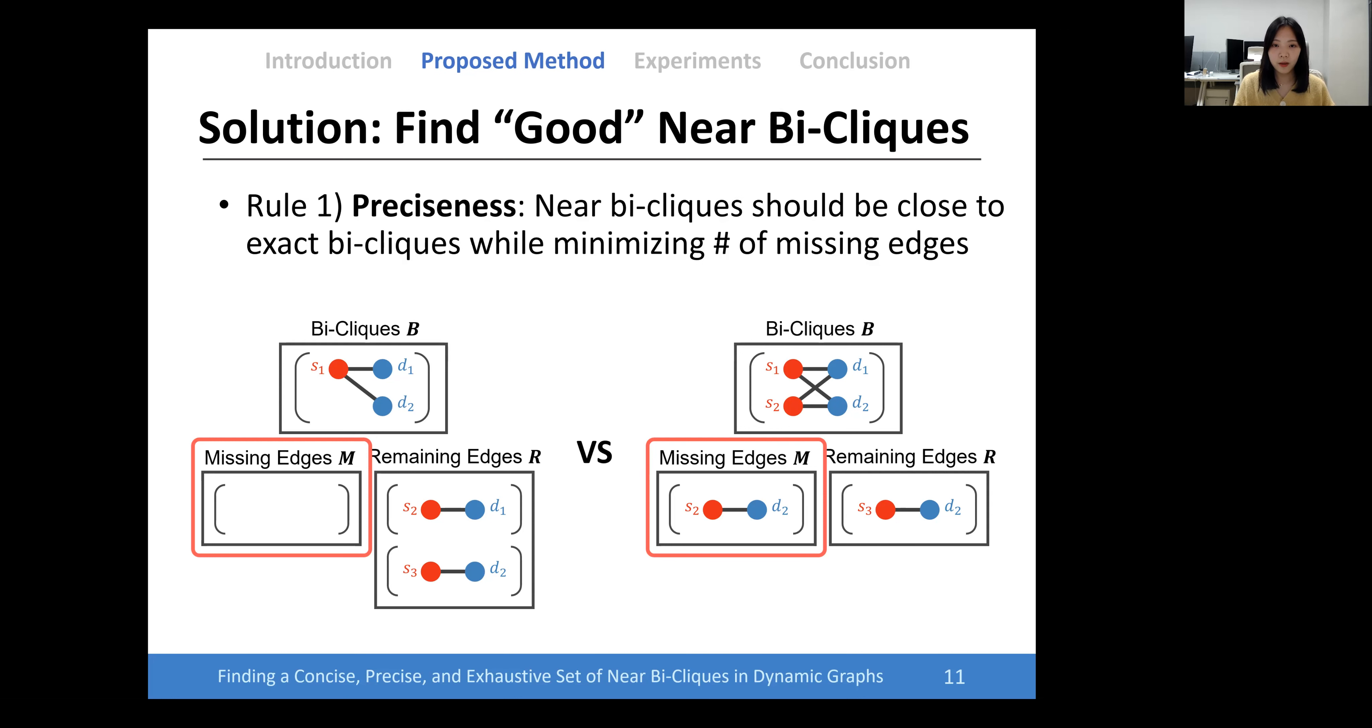From here, we define the first rule, preciseness, which means near bi-cliques should be close to exact bi-cliques while minimizing the number of missing edges.